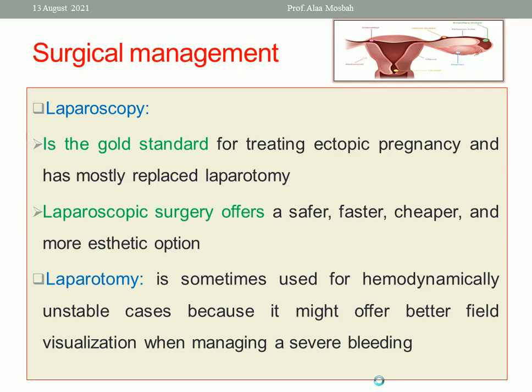Regarding surgical management, laparoscopy is the gold standard for treating ectopic pregnancy and has largely replaced laparotomy. Laparotomy is reserved for hemodynamically unstable patients with severe internal hemorrhage needing better visualization. Otherwise, laparoscopy is used for most cases — it is safer, faster, cheaper, and more aseptic.